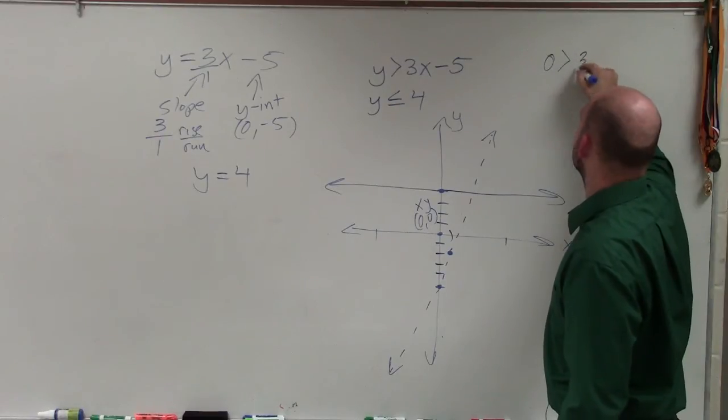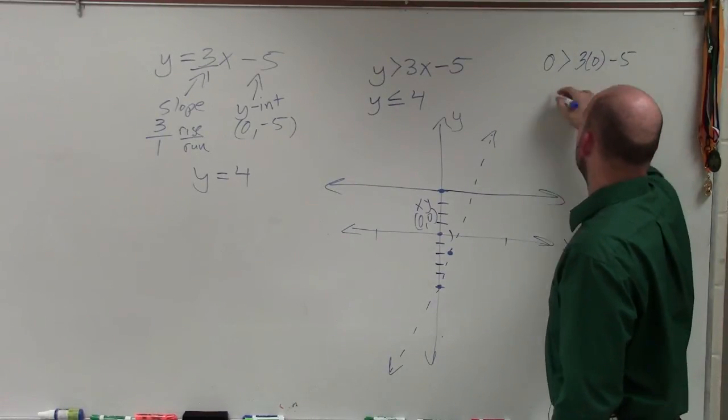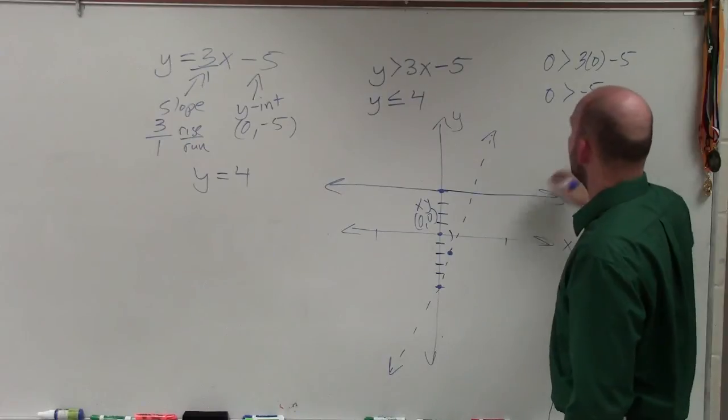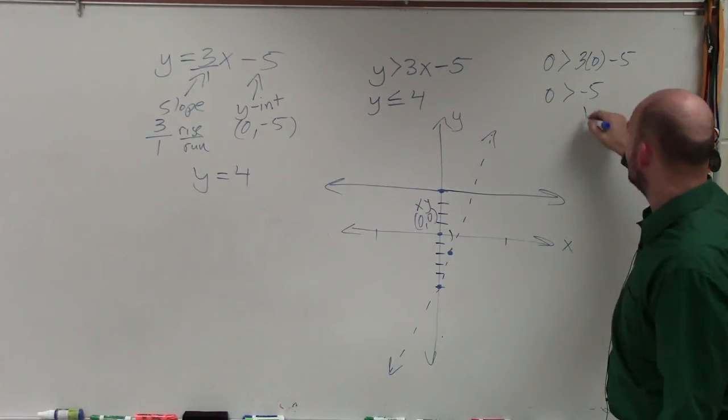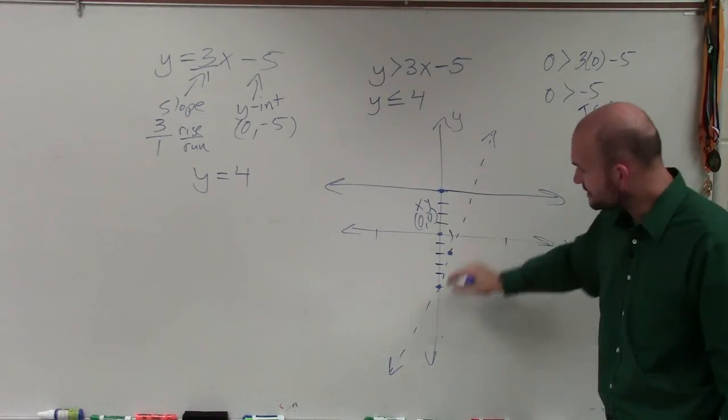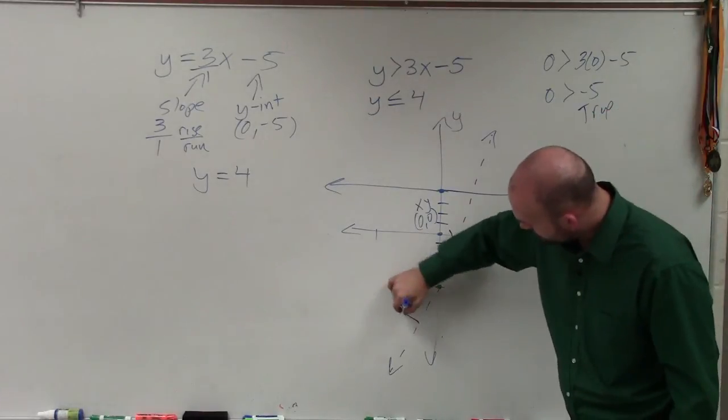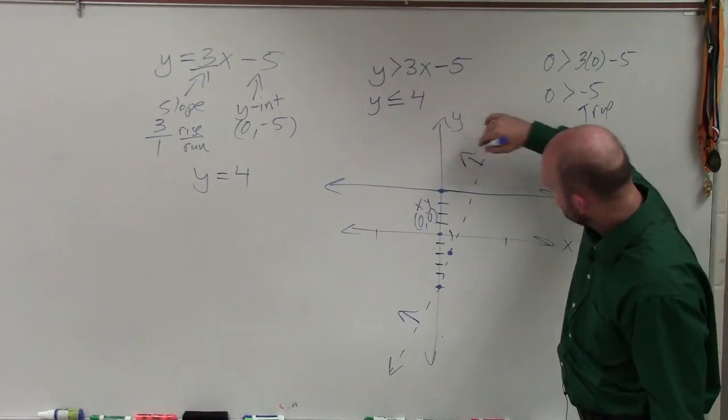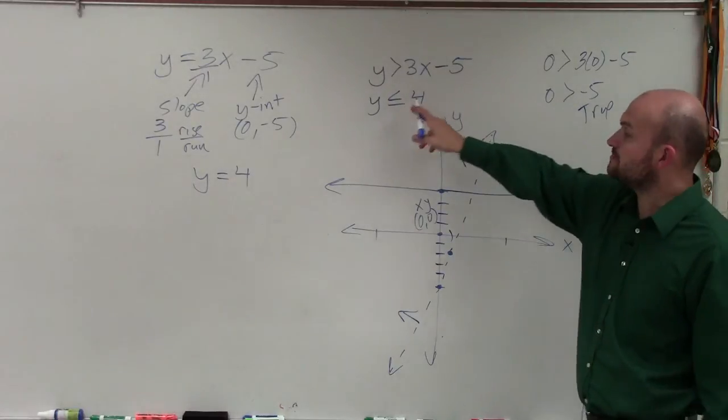So let's test the first inequality here. I have 0 is greater than 3 times 0 minus 5. 0 is greater than negative 5. And that is obviously true. So I tested this, and that means that this point is true. So I'm going to put some arrows here, meaning I'm going to be shading above the line.